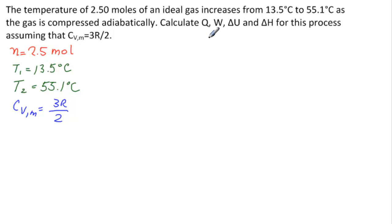And we need to calculate Q, W, delta U, and delta H. And we have the keyword here: adiabatically. Adiabatically immediately means that Q is equal to 0. So we're looking for W, delta U, and delta H.